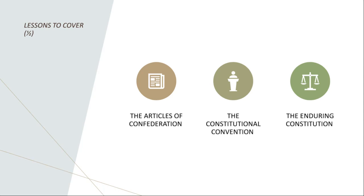Think of the Articles of Confederation as the first draft, as you might do when writing an essay, and the Constitution as the final draft — where you edit and take the opinions of others. Say you're publishing a book: an author always sends it to an editor, receives notes back, and then proceeds to make those edits before publishing the book.